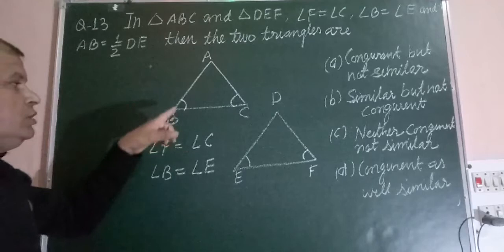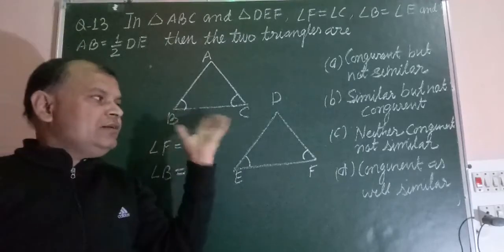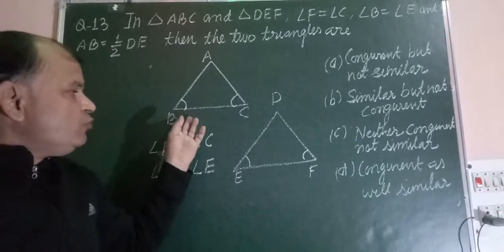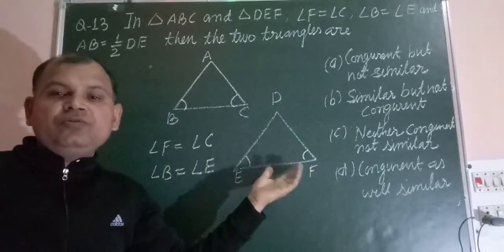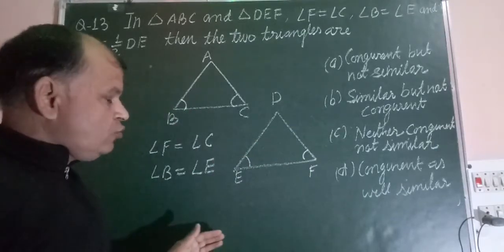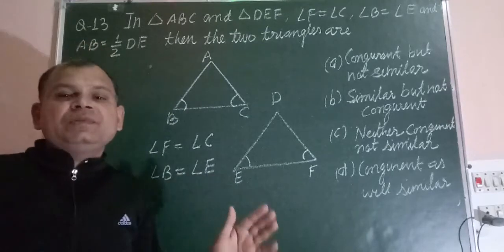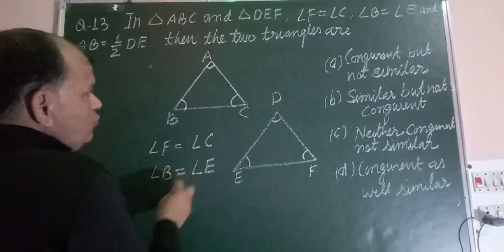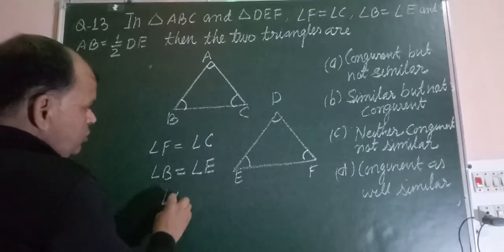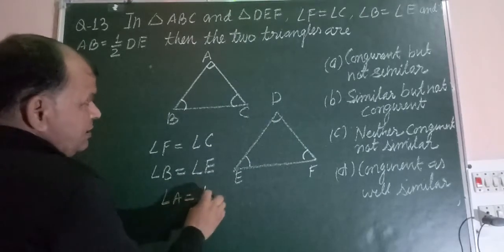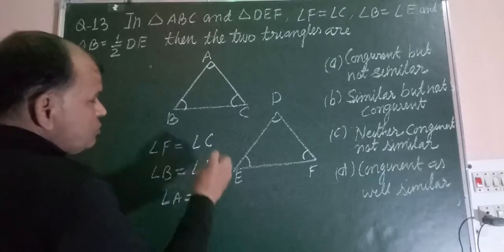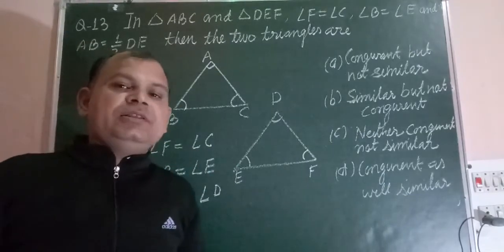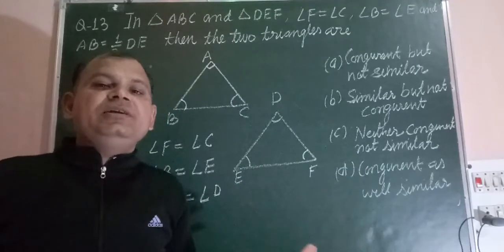So you know that if two angles are equal to two angles of another triangle, then third angle is also equal by angle sum property, because sum of all three angles is 180. If two angles are equal, then third angle will be equal.